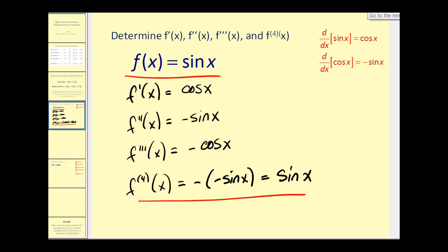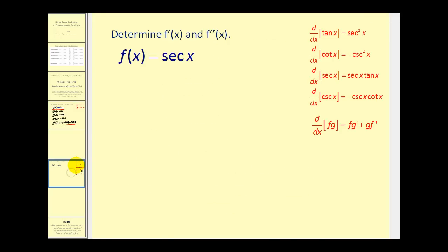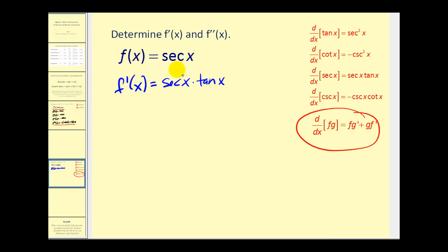Let's look at one more example. Here we want to find the first and second derivative of f of x equals secant x. The first derivative is review — the derivative of secant x is equal to secant x tangent x. Now our second derivative is going to take a little more work because this is actually a product, so we're going to have to use the product rule where this is our first function f and this is our second function g.